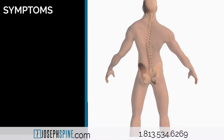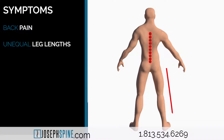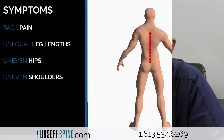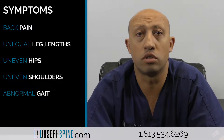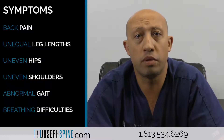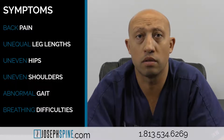Symptoms of adolescent idiopathic scoliosis can include back pain, unequal leg lengths, uneven hips, uneven shoulders, or one shoulder feeling or looking higher than the other. It can also result in abnormal gait, as well as breathing difficulties when the ribcage puts pressure on the lungs.